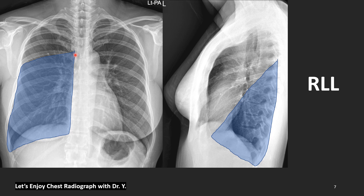Lower lobe. The lower lobe medial side is all through the linear vertical line of mediastinum, including the diaphragmatic side, lower CP angle, and lateral side. But the upper portion is a little indistinct. In the lateral film, that's also a triangular shape: major fissure, oblique fissure, posterior wall, and all through the lower area of the diaphragm.